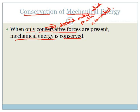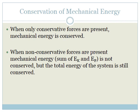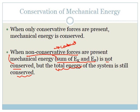When non-conservative forces are present — your contact forces like applied force or friction — mechanical energy, which is the sum of kinetic energy and potential energy, is not conserved. But remember, the total energy of the system is still conserved. The total energy of a system is always conserved. However, mechanical energy is only conserved when there are only conservative forces present.